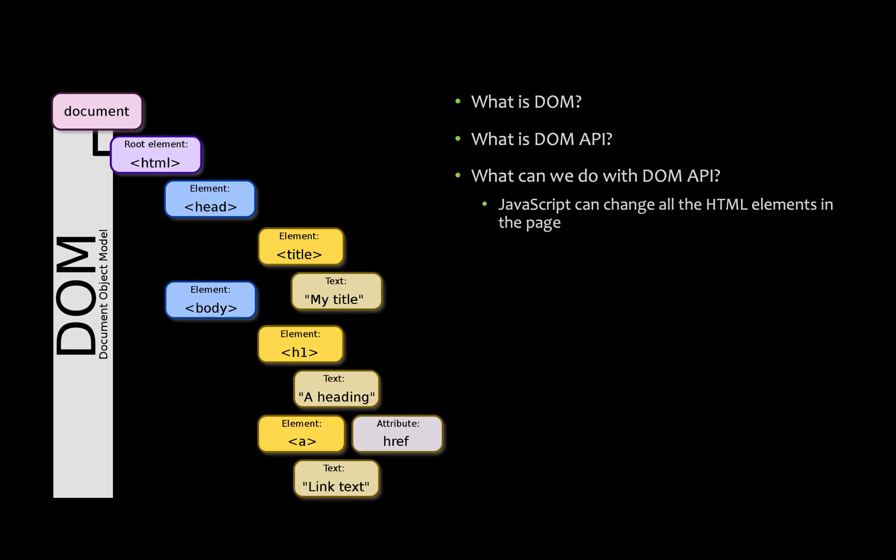JavaScript can change all the HTML elements in the page. If you have DOM manipulation, you can access a script element, access information, and access text using JavaScript. And also, HTML attributes — if you have an element or a link tag, there are attributes. Even for HTML attributes, you can use DOM APIs.